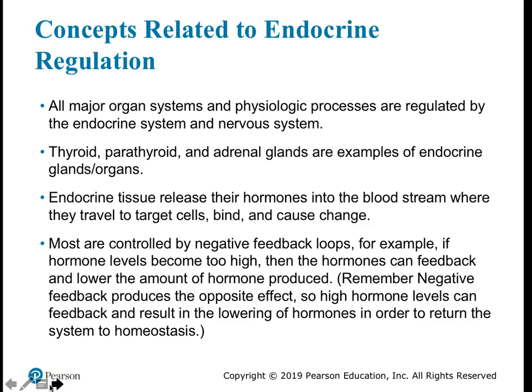The thyroid, parathyroid, and adrenal glands are examples of endocrine glands and organs. An endocrine gland releases hormones into the bloodstream, where they travel to target cells, bind to them, and cause change. Because they travel through the bloodstream, they can affect many different cells and organs as needed.